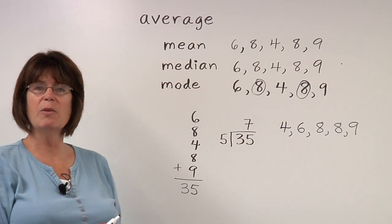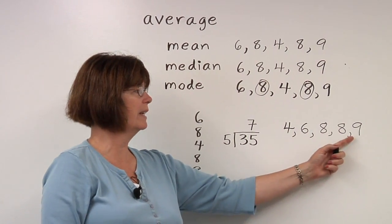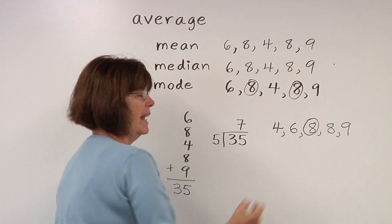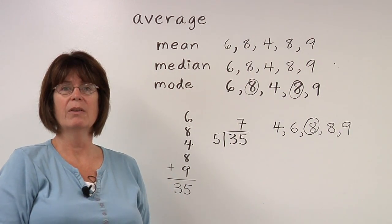In order to find the median, then, we look for the piece that is directly in the middle. 2 above it and 2 below it. 8 is also the median.